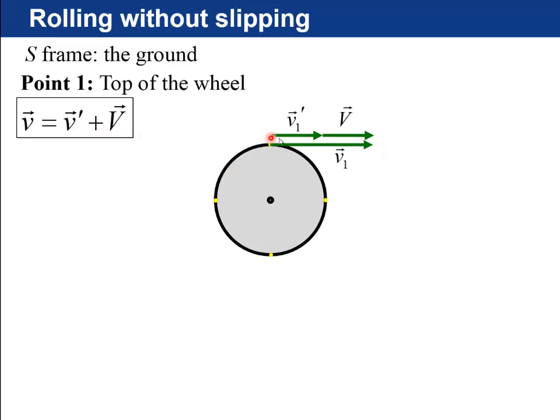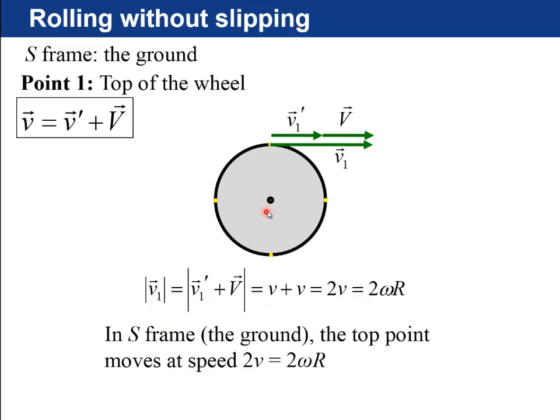So in the ground frame now, we've got the new velocity is v prime in the prime frame plus this capital V. So the point one at the top of the wheel, it'll be v1 plus v, they're both little v, and you get 2v, 2 omega r. In the S frame, the top point of the wheel moves at a speed 2v, where v is the speed of the axle.